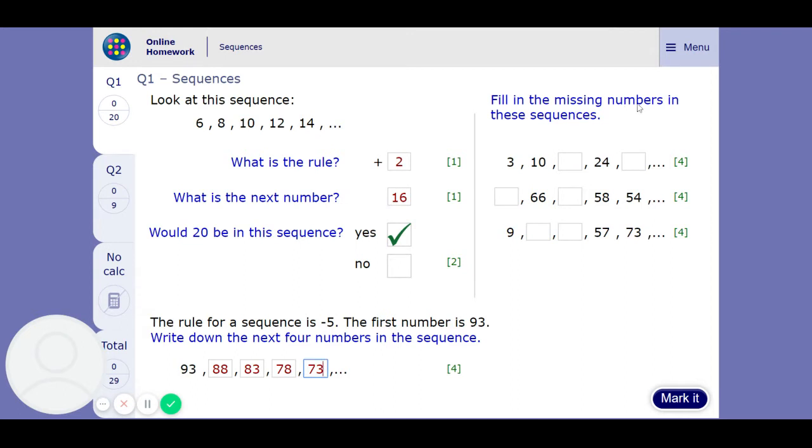Fill in these missing numbers. Let's have a look what's happening here. We are adding 7. So if we add another 7 we get to 17. If we add another 7 we get to 24. So that's more confirmation that we're correct. Add another 7 you get to 31.